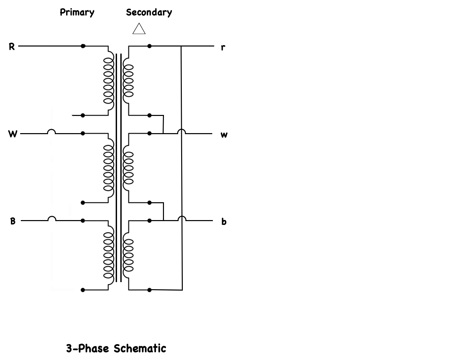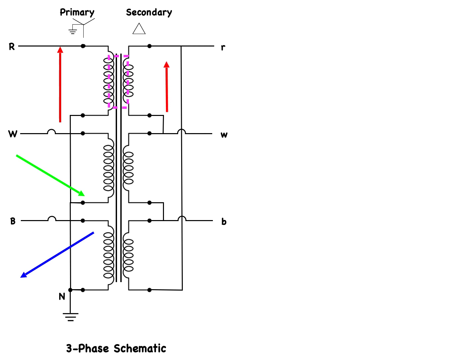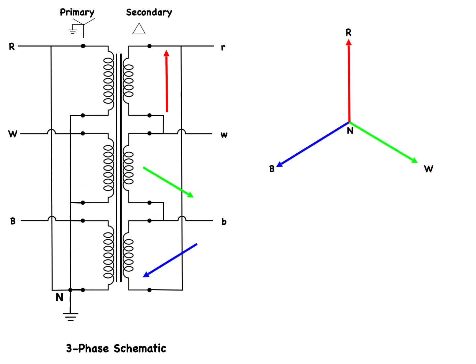Let's leave the secondary connected as delta and reconnect the primary in a grounded Y. The primary is now connected again to a balanced three-phase system — red, white, and blue. Remember that each transformer's secondary winding is magnetically linked to the primary; therefore the open-circuit secondary voltages are in phase with the primary voltages. As before, the primary voltage phasors are connected together and form a neutral. The secondary winding of the primary red-to-neutral winding is connected between the red and white phase of the secondary, and because it is in phase with the primary red-to-neutral voltage, we can label it as secondary phase-to-phase red-to-white voltage.